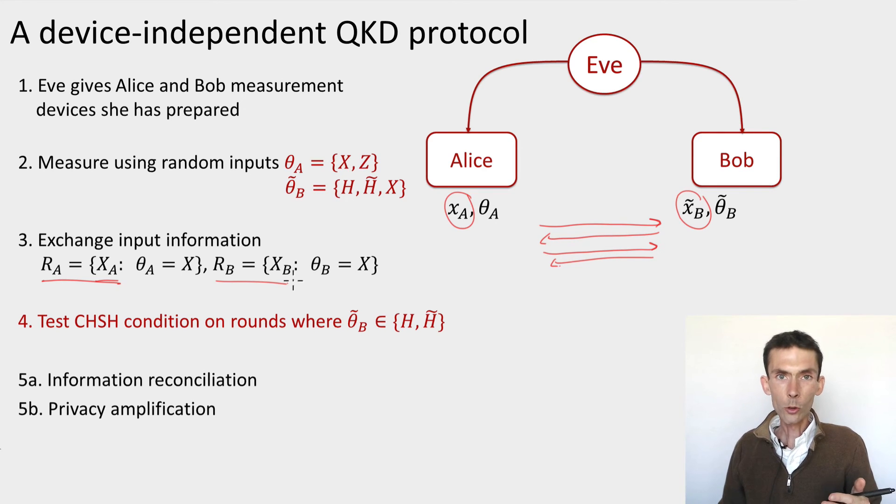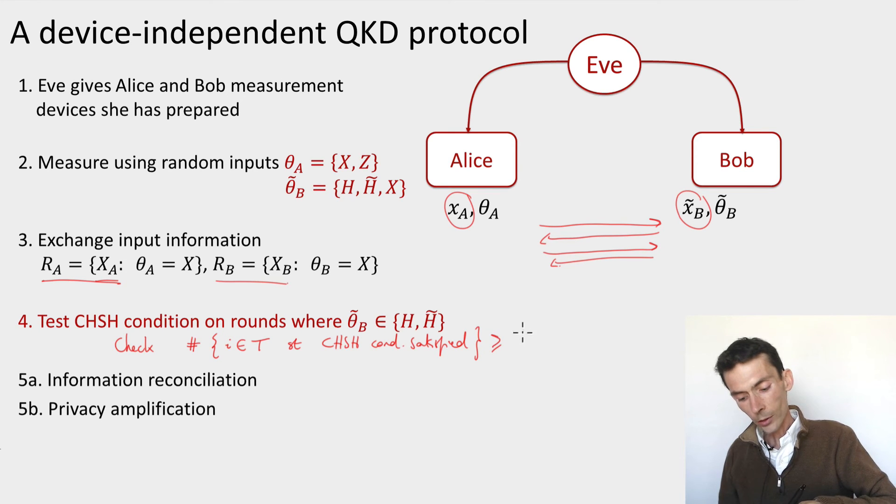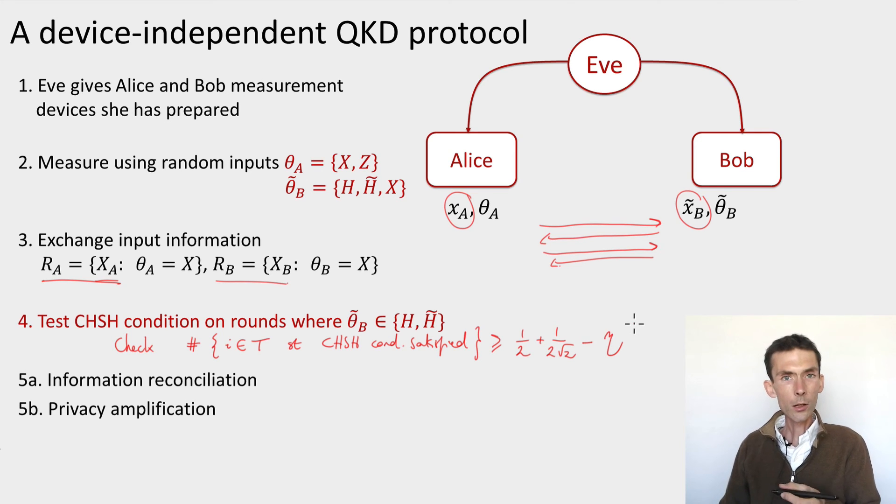We're going to interpret this as inputs for the CHSH game and check that the CHSH condition was satisfied in 85% or close to 85% of those rounds. So we're going to check that the total number of test rounds, so test rounds are rounds where Bob's input was not an X such that the CHSH condition is satisfied. This should be greater than the optimum value, ½ + 2√2, minus perhaps a little bit of latitude in case there's noise or errors on the channel. So we introduce the noise parameter here, η, and we allow our devices to not quite perform close to optimal. So if this condition is not satisfied, the protocol aborts. If it's satisfied, it proceeds.